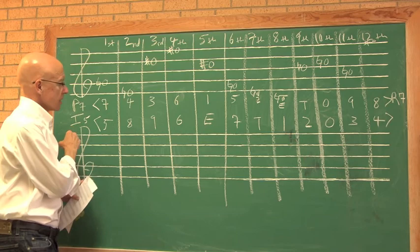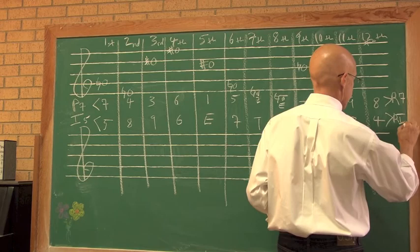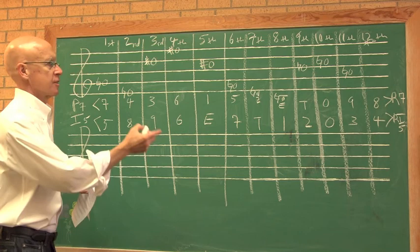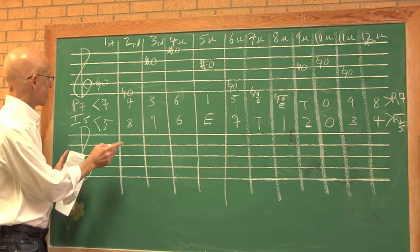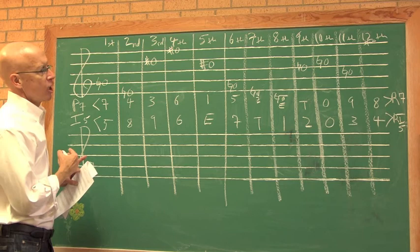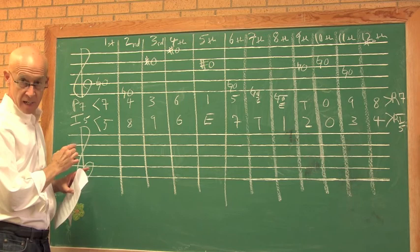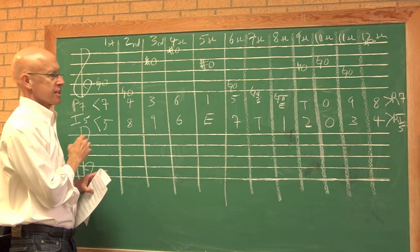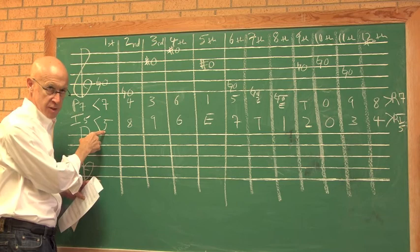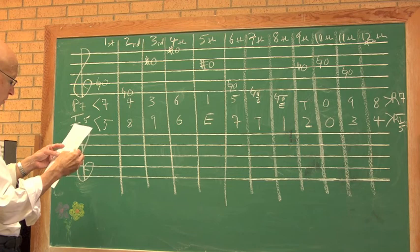So, if you have the retrograde of the inversion, you have RI5, which means the retrograde of an inversion of the row which starts on 5, whose prime form starts on G. So, P7, the original form of the row starting on Pitch class G. R7, the retrograde of that row. I5, the inversion of all the pitch classes in the row starting on F, because 7 inverts to 5. And RI5, the retrograde of the inversion which starts on F, which is itself the inversion of the prime form starting on G.